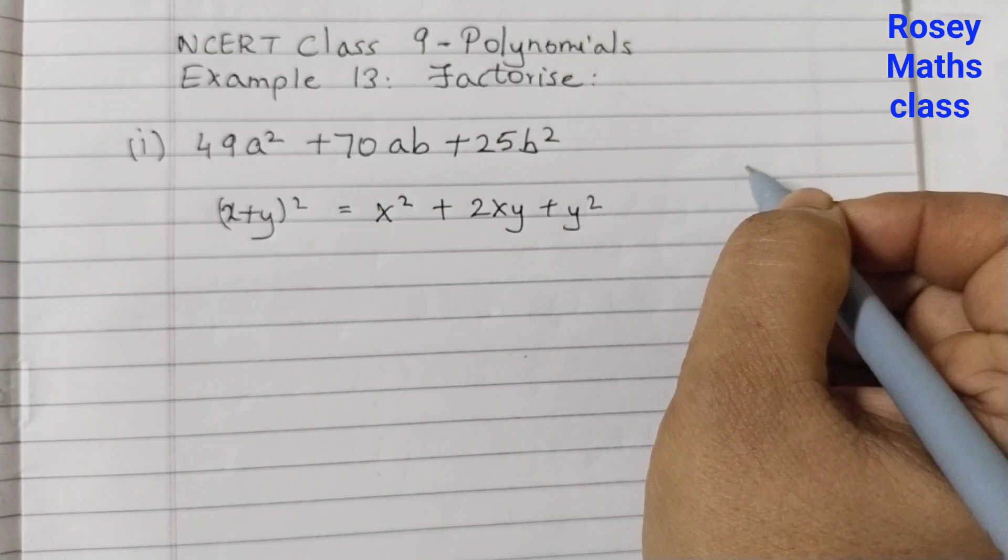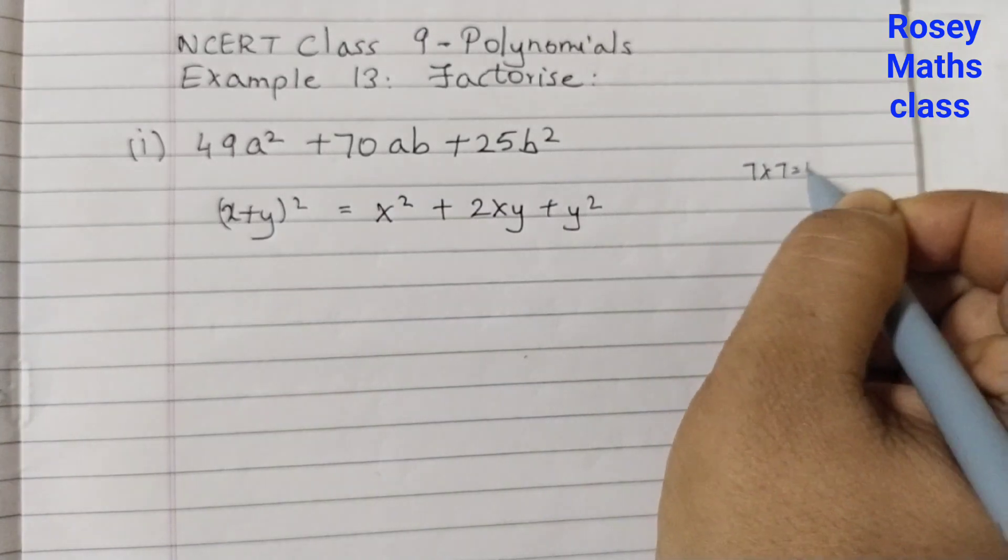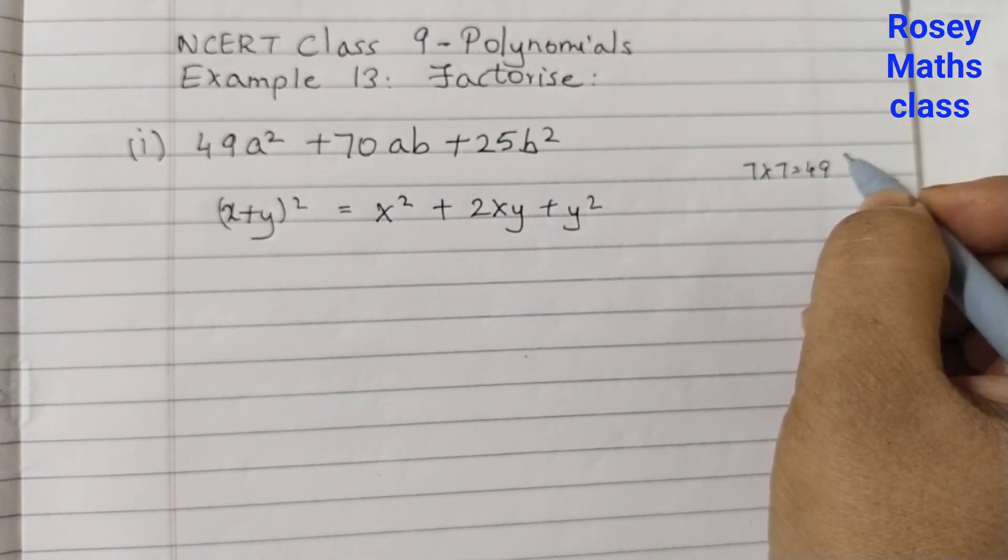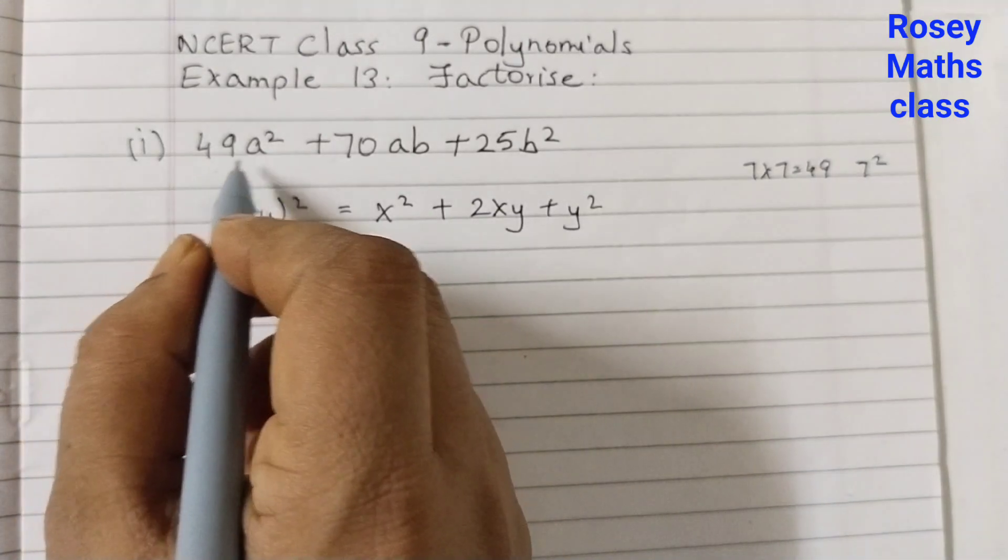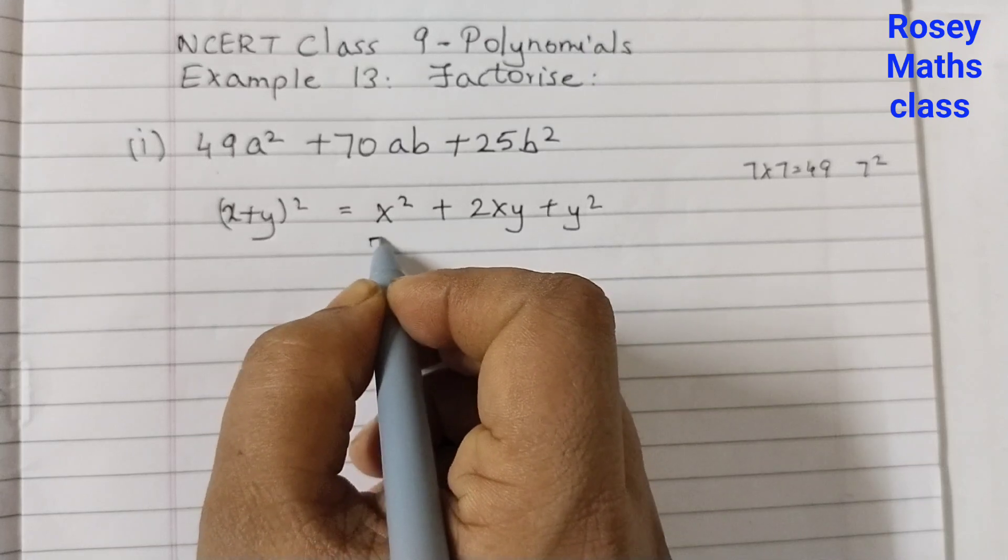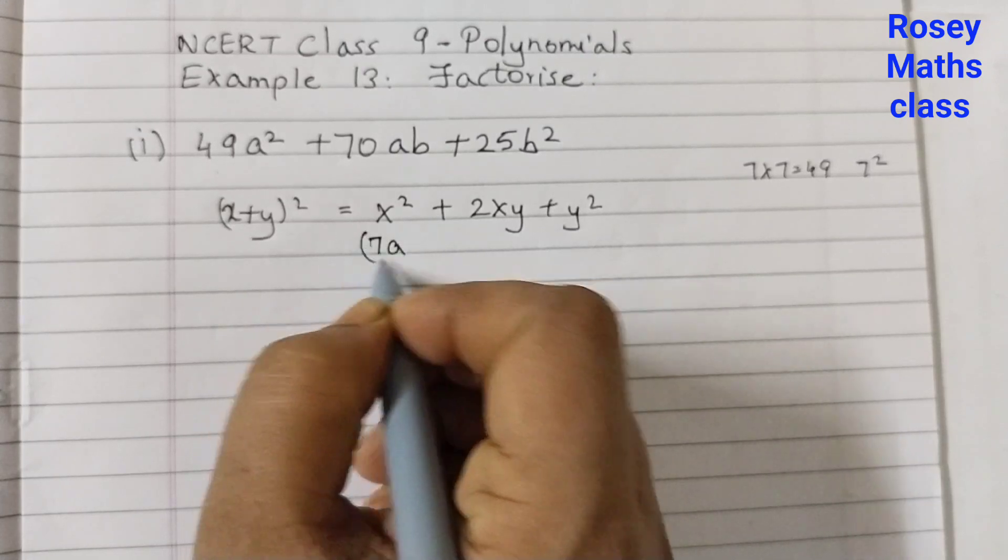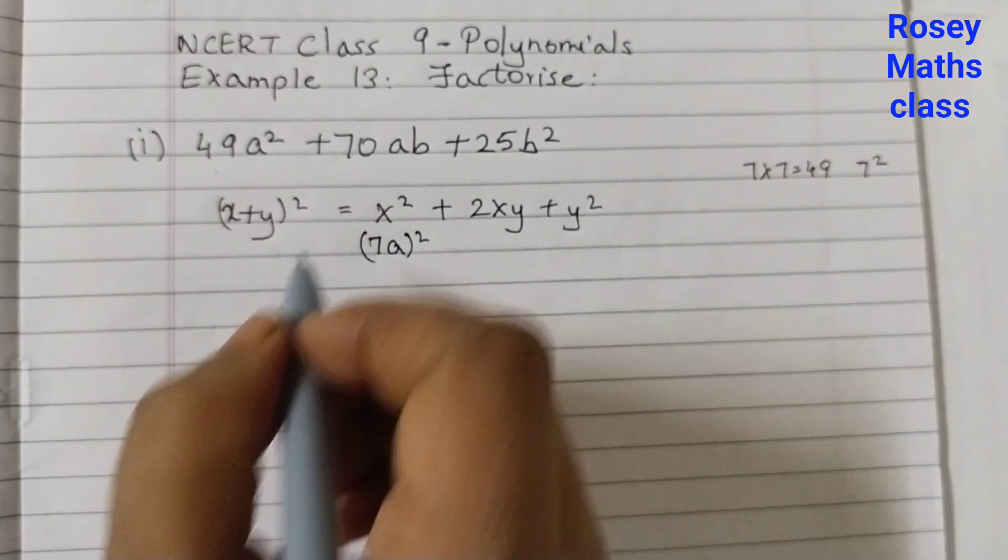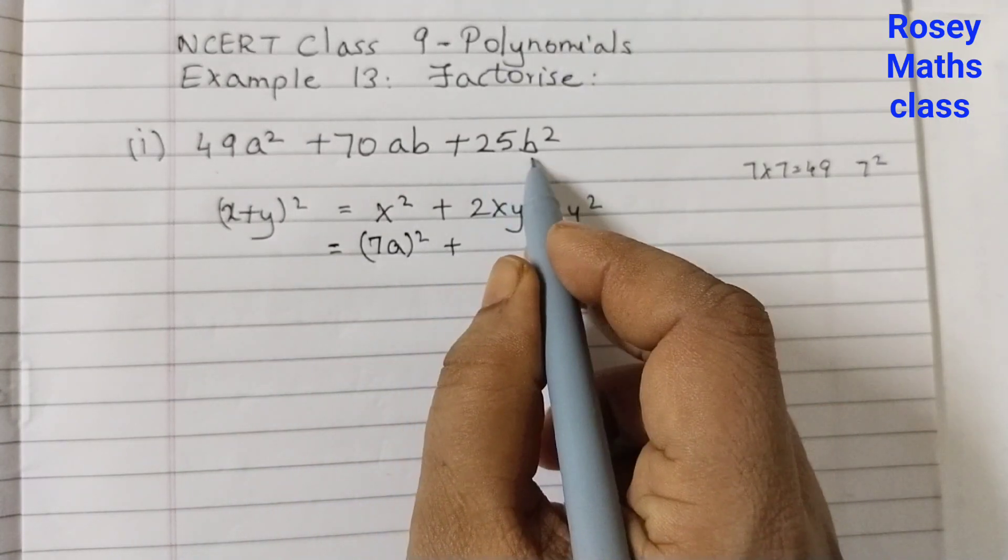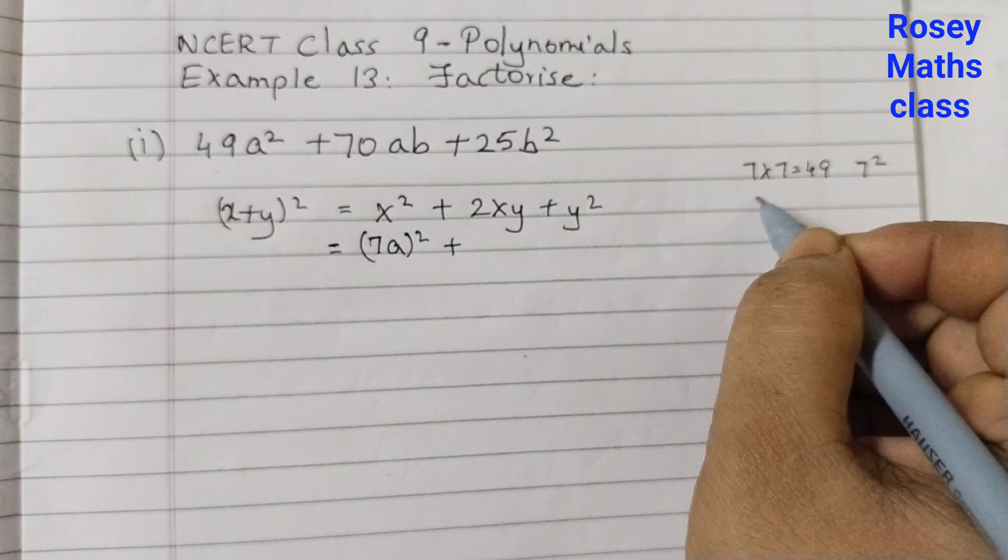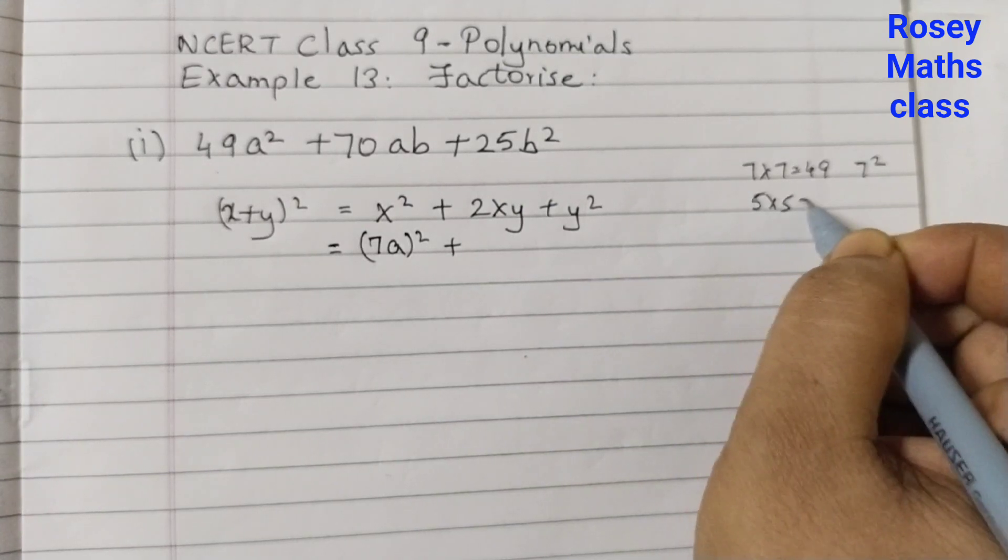49 is 7 into 7 is 49. That means 7 squared is 49. So 49a squared we can write as 7a squared. Let's see 25b squared. 25 is 5 into 5, 25.